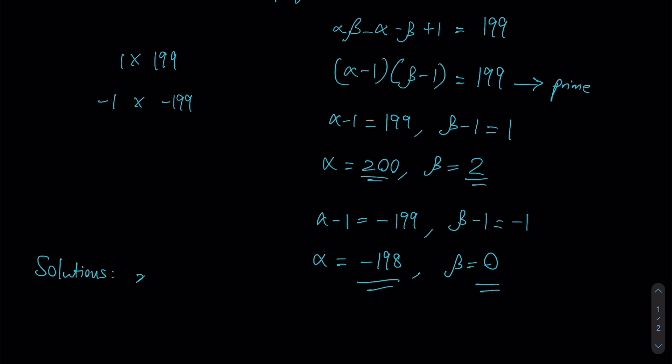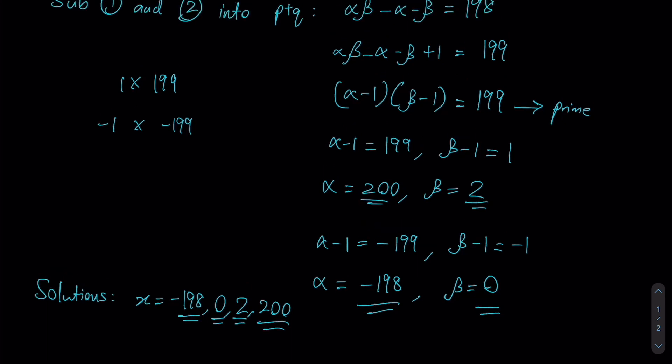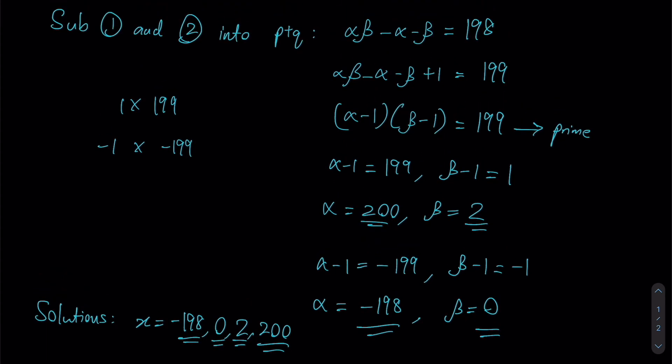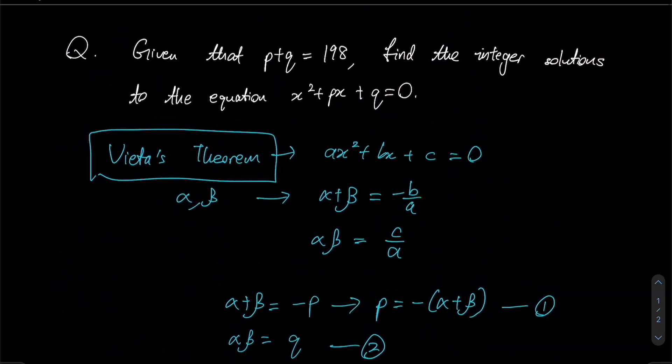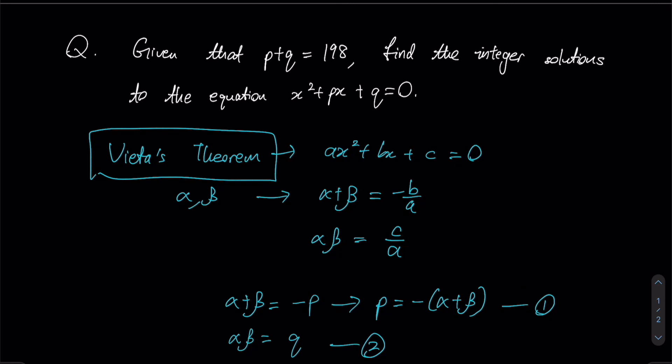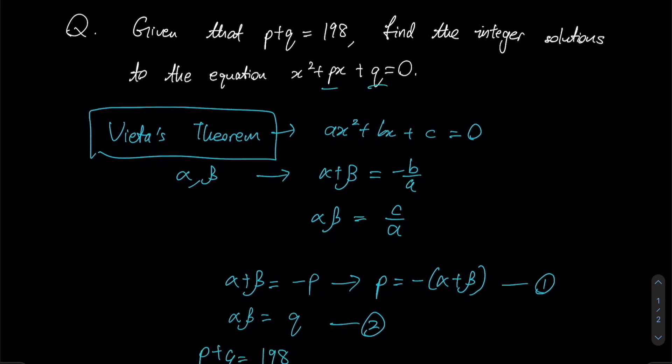Therefore, your solutions are x could be, starting from the smallest, -198, we have 0, we have positive 2, followed by positive 200. Therefore I have 4 total integer solutions for x.